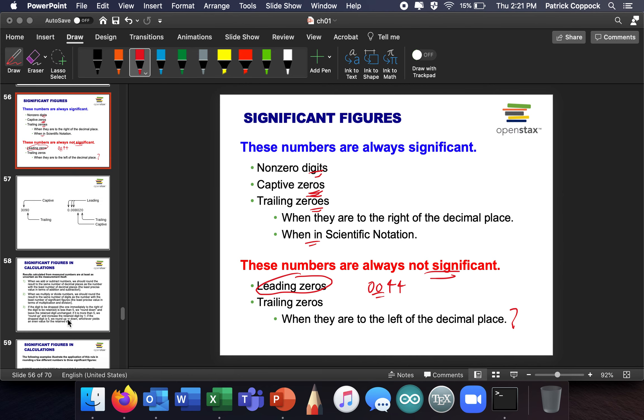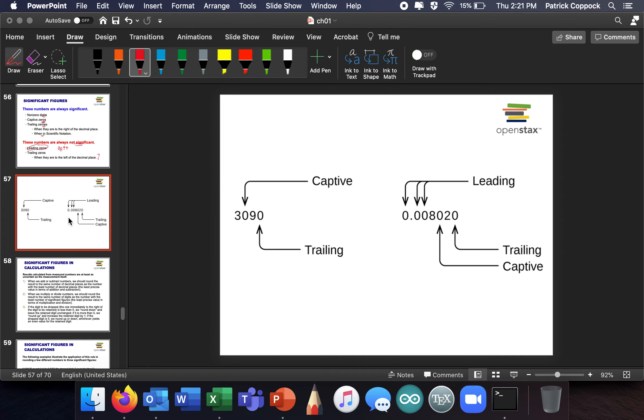Okay, so here's some examples. We have some great practice that we'll be doing throughout the semester. So this is not something you're expected to be good at by the end of this lecture. This is just an explanation. There's a captive 0. There is a captive 0 because it's between non-zeros. And here's a trailing 0 to the left of the decimal point. Now, here are leading 0s. And here's a trailing, which is to the left. So there are four sig figs here because that's captive. So these are non-zeros, so they're definitely significant.